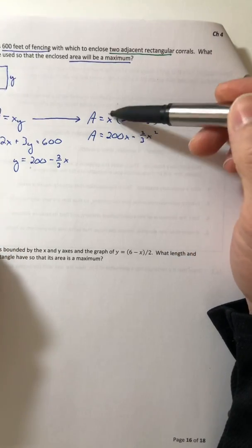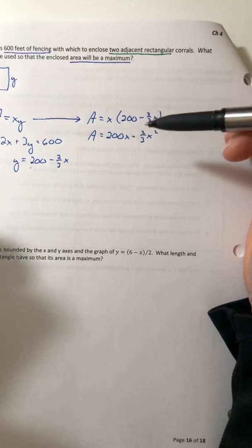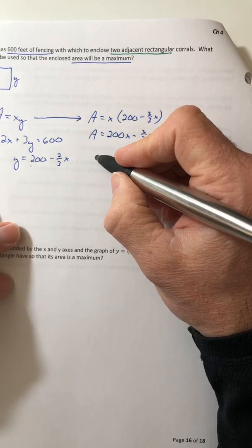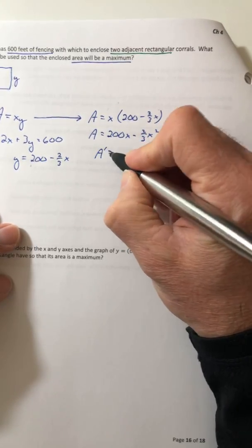So 200X minus two thirds X squared. You don't have to distribute. If you leave it like this, you're going to use the product rule. If you distribute, then you don't have to use the product rule. But either way you go, you are going to find a derivative.